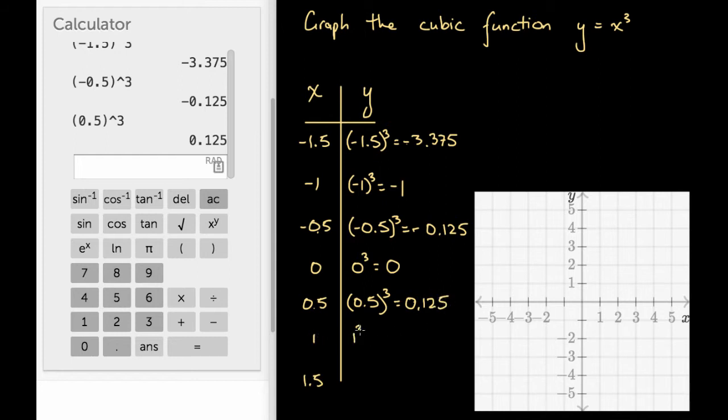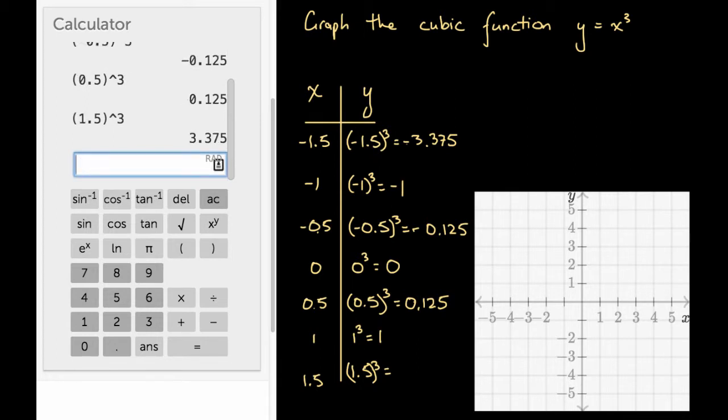Here, we're going to have 1 cubed. 1 times 1 times 1 is 1. You're going to have 1.5 cubed. In fact, we'll put some brackets around this just to make it very clear. So I have 1.5 cubed. That's going to equal 3.375.